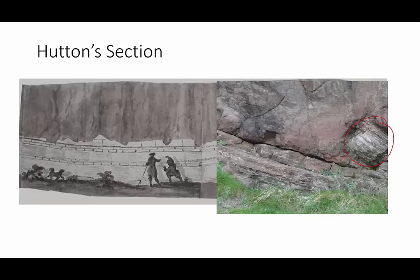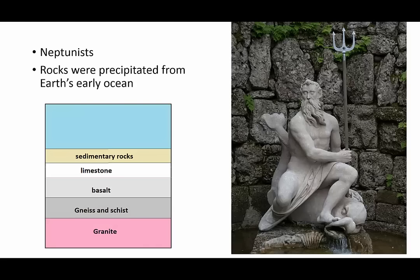This interpretation was completely at odds with the theories of the time. One group of scientists, called the Neptunists, believed that rocks had precipitated out of the Earth's early ocean. First came the granite, then the gneisses and schists, then the basalts, which they thought were sedimentary, and finally the limestones and other sedimentary rocks.